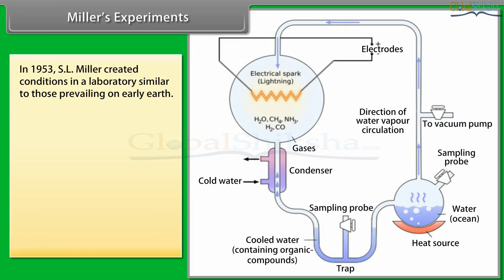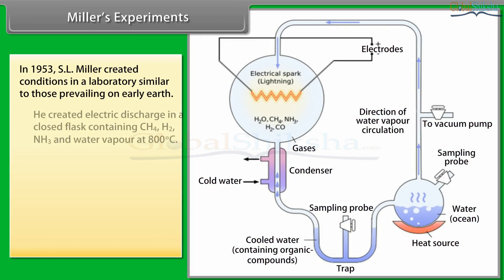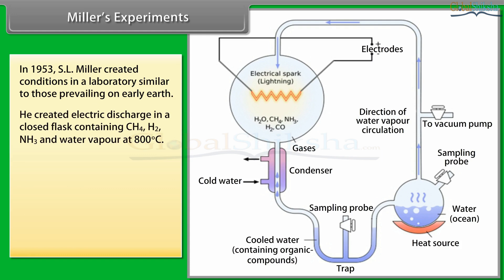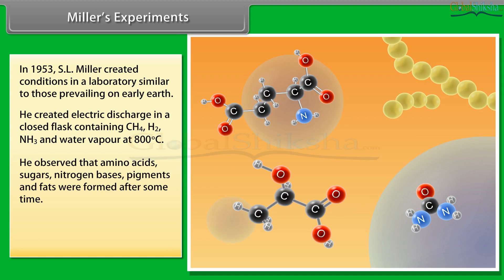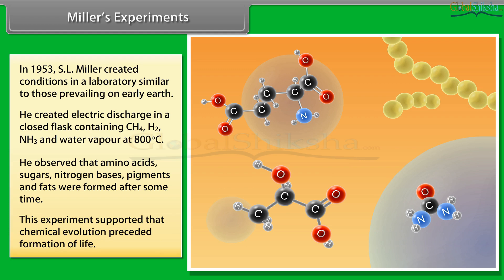Miller's Experiment: In 1953, S.L. Miller created conditions in a laboratory similar to those prevailing on early Earth. He created electric discharge in a closed flask containing CH4, H2, NH3 and water vapor at 800 degrees Celsius. He observed that amino acids, sugars, nitrogen bases, pigments and fats were formed after some time. This experiment supported that chemical evolution preceded formation of life.